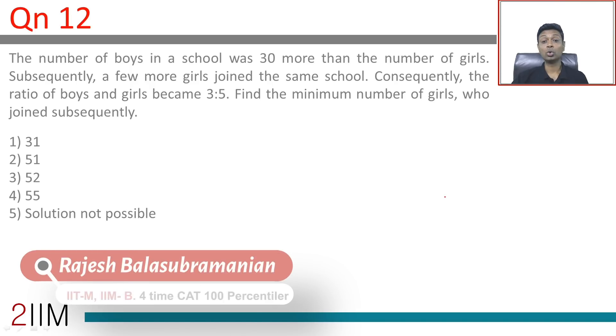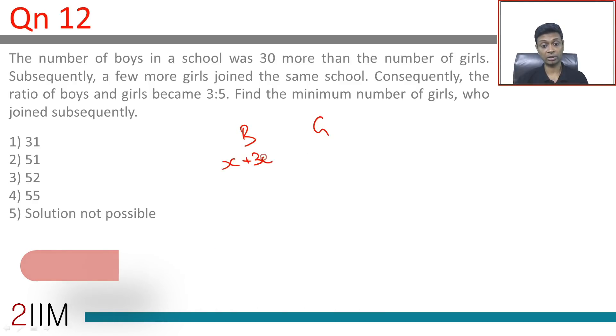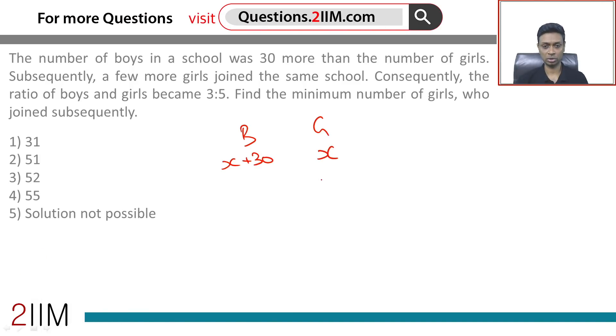The number of boys in a school was 30 more than the number of girls. Subsequently, a few more girls joined the school. So boys equals x plus 30, girls equals x. After more girls joined, girls became x plus y.